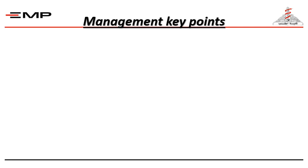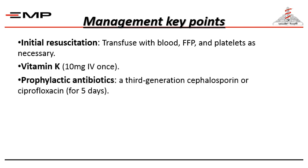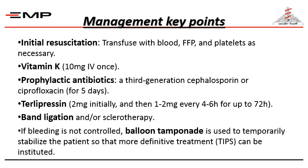The management key points for patients with bleeding esophageal varices are: initial resuscitation with blood transfusion, fresh frozen plasma, and platelets as necessary; vitamin K; prophylactic antibiotics — third-generation cephalosporin or ciprofloxacin — for five days; terlipressin at the appropriate dose; band ligation and/or sclerotherapy according to the site of varices; and if bleeding is not controlled, balloon tamponade to temporarily stabilize the patient so that more definitive treatment such as TIPS can be instituted.